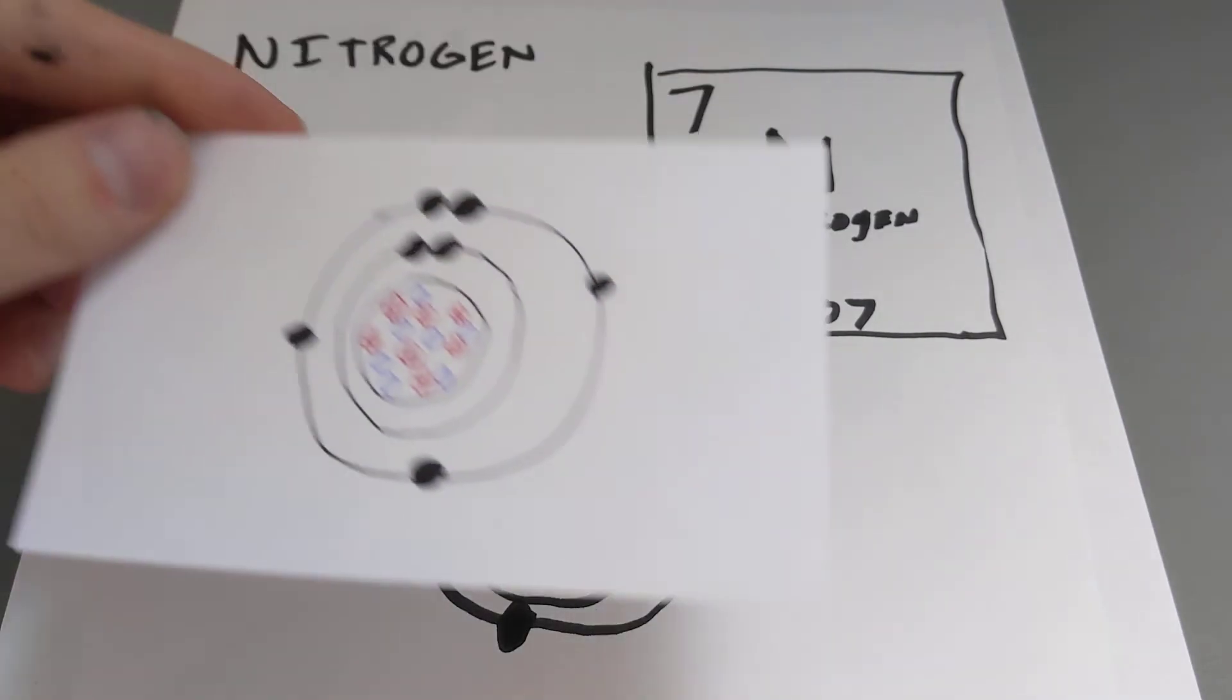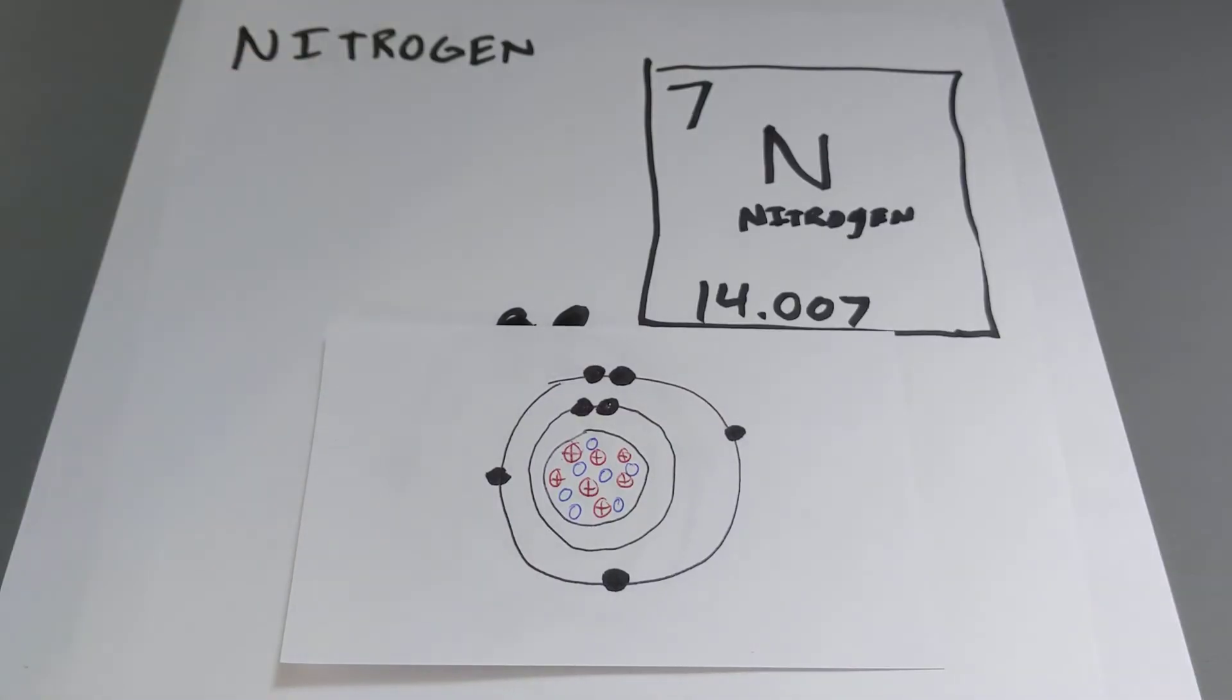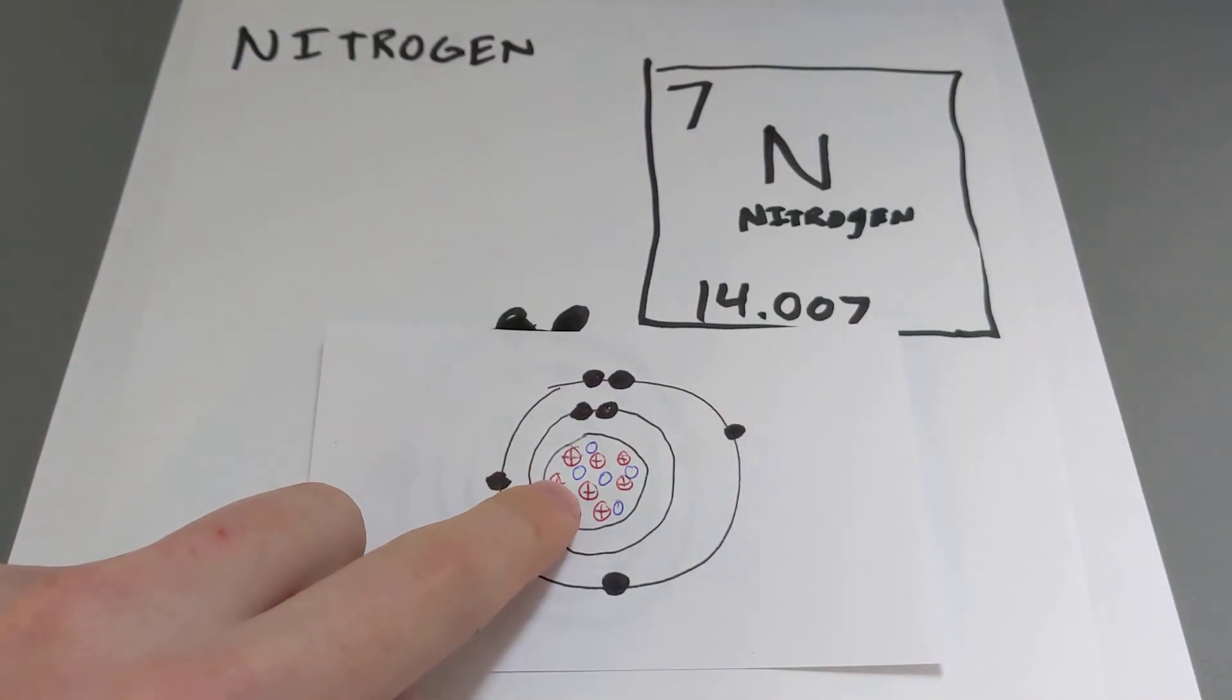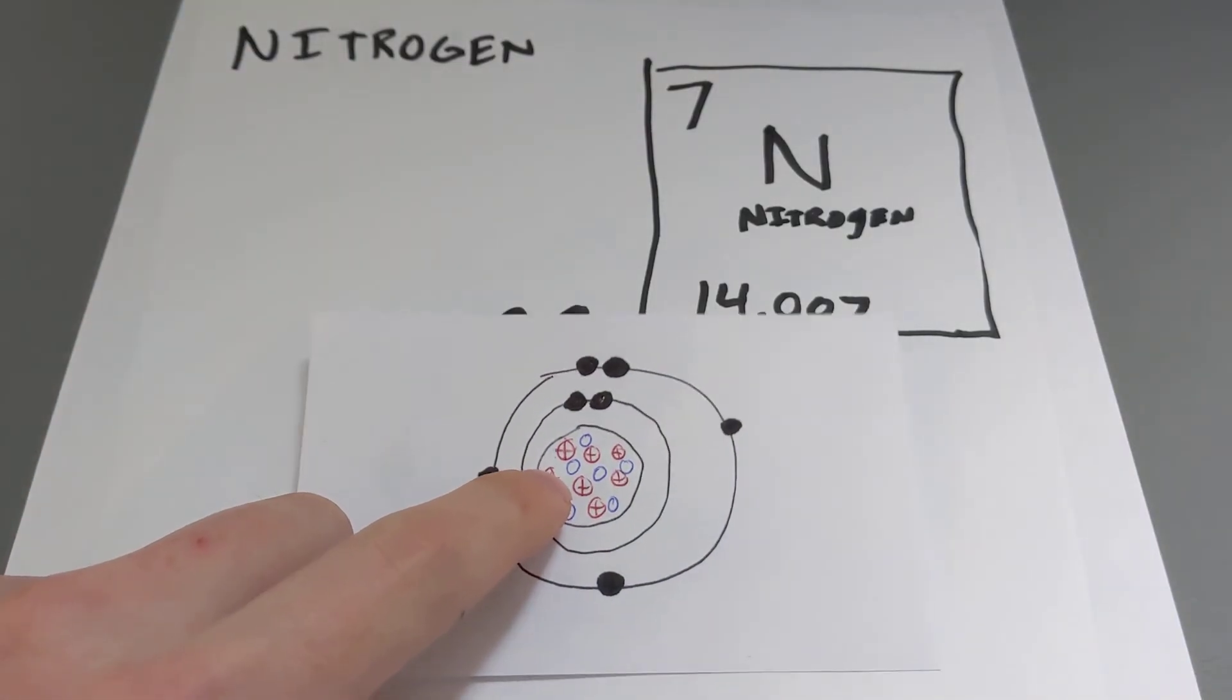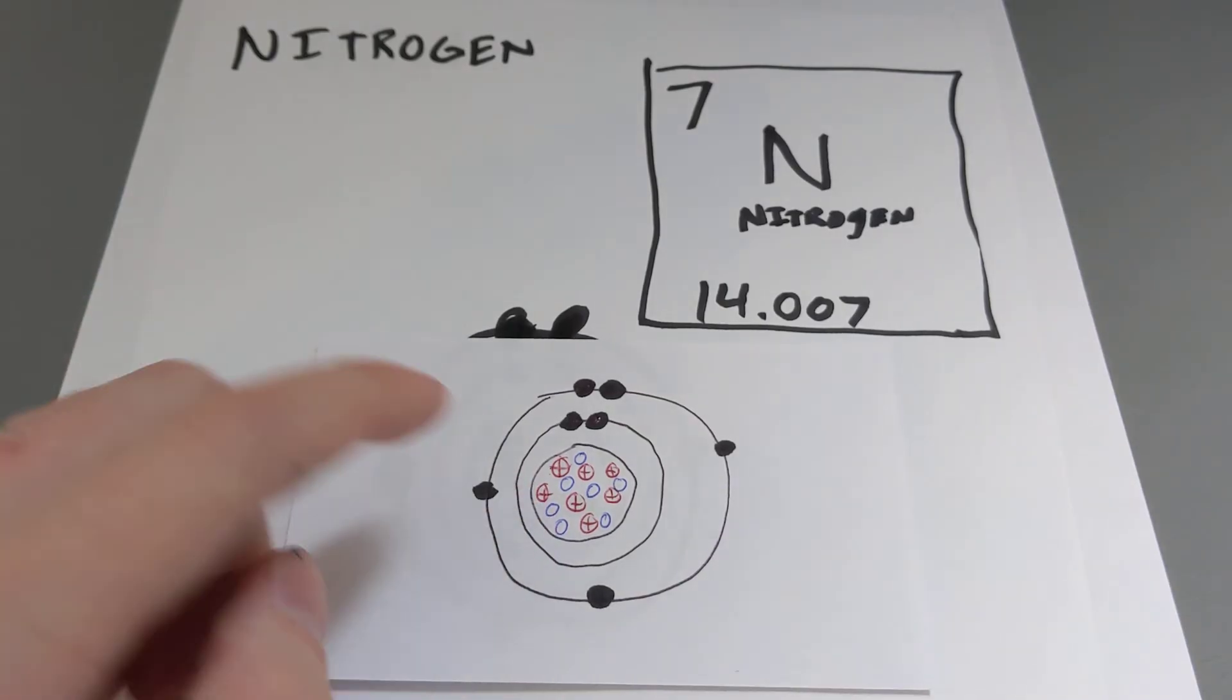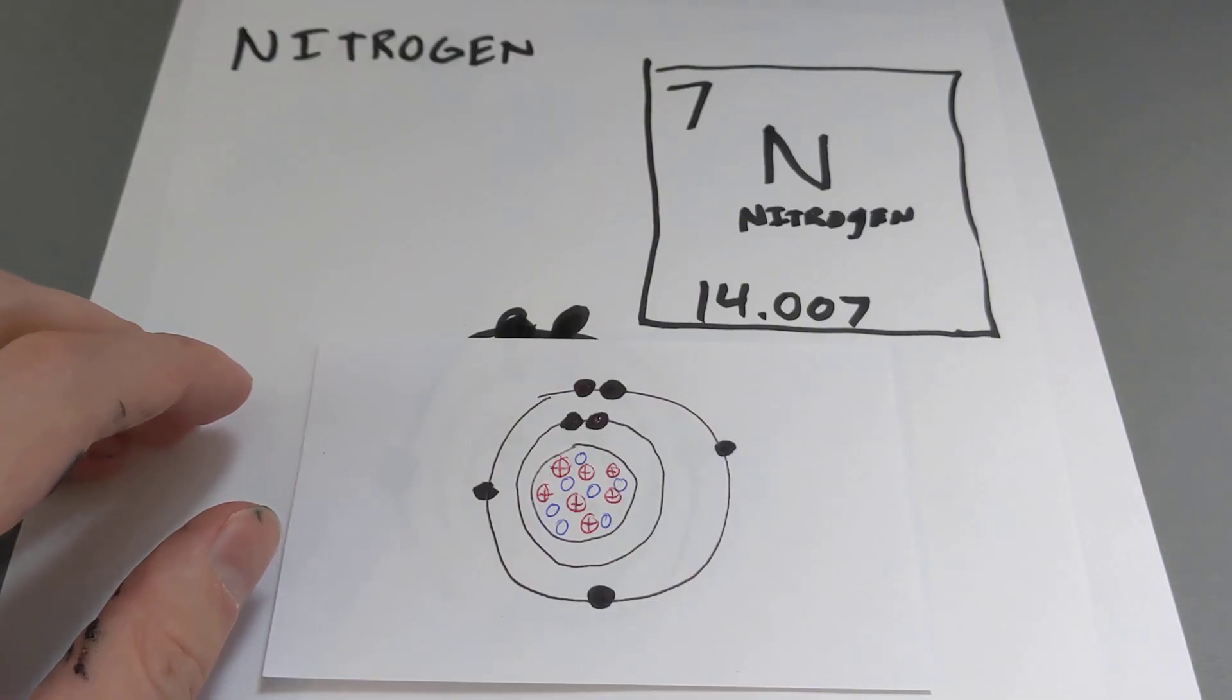Here is another example of a Bohr-Rutherford diagram. And instead of just writing protons and neutrons in the center, I've actually drawn the protons with a little positive, neutrons with a circle. You'll notice electrons are the same. 2 shells, 2 in the inside, 5 in the outside. And that's drawing a Bohr model.